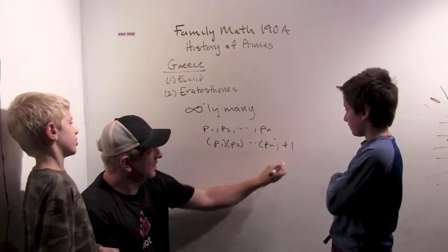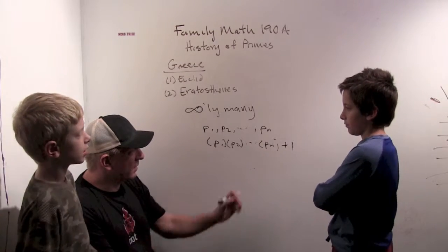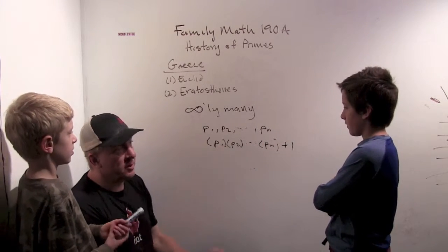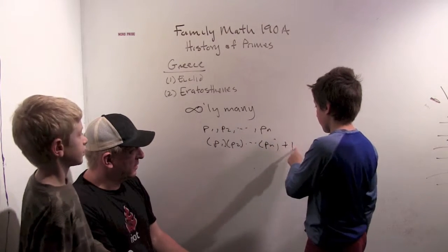Then you add 1 to it. So that means when you divide by any prime, it's going to have a remainder of 1. We thought these were all the primes. But now we were wrong. Why are we wrong? Because none of these primes go into this. They all leave a remainder of 1.